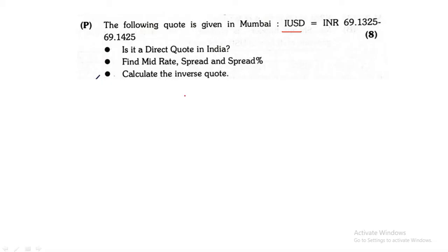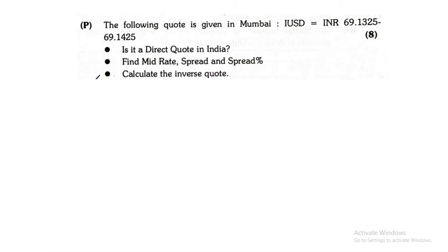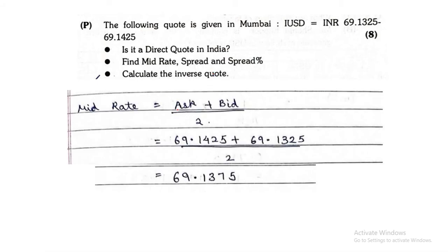Yes, it is a direct quote. 1 USD to INR — the spot, bid, and ask rate is given. According to the rule, 1 unit is your foreign currency and INR is your home currency, so this is a direct quote in India as foreign currency is expressed in 1 unit. Second, you need to find the mid rate, spread and spread percent. The mid rate formula was ask plus bid divided by 2. We added up and divided by 2, and we should get the answer as 69.1375.